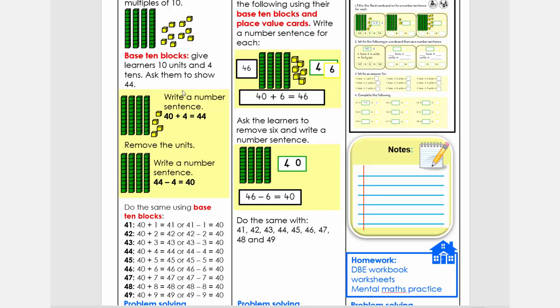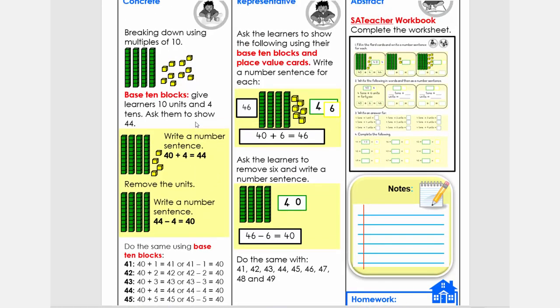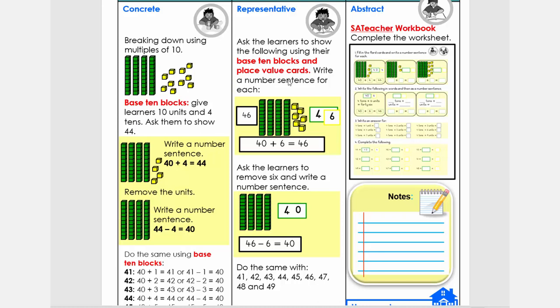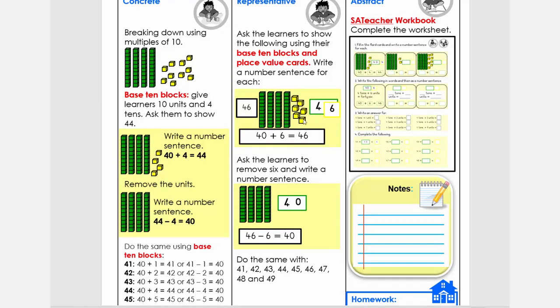Because children need to realize that subtraction and addition are inverse operations. Then when we go to the representative level, we're going to do similar activities. But this time we add the flat cards, the place value cards. We show it with the base 10 blocks, and then the flat cards. Remember, these two steps you can combine and do at the same time. So again, you're going to have 40, you're going to add 6, it gives me 46. Then we're going to ask them to remove the 6 units, and then it will give me again 40. I want you to do it now with these numbers.